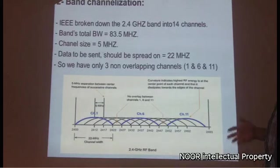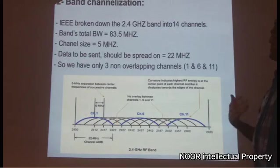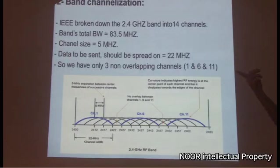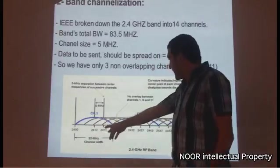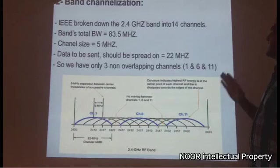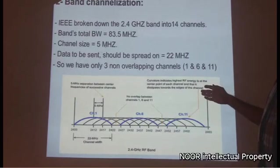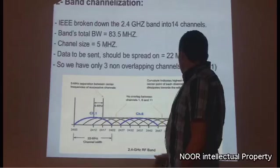Research showed that to transmit data at acceptable and high speeds, the data must be spread across 22 MHz. However, spreading data over 22 MHz on channels spaced only 5 MHz apart causes a lot of overlaps and interference. Therefore, research determined that there are only three channels that can be used simultaneously to transmit Wi-Fi signals without overlap: channels 1, 6, and 11.